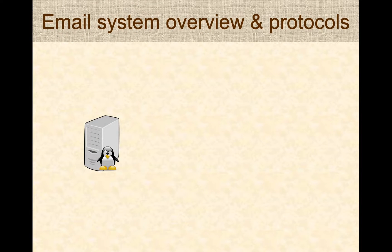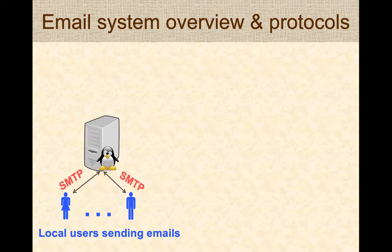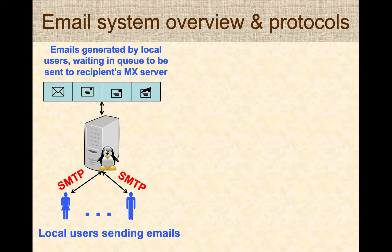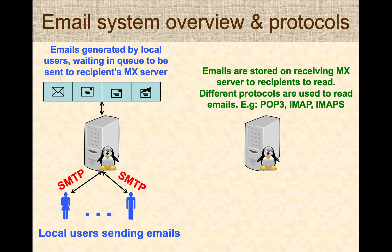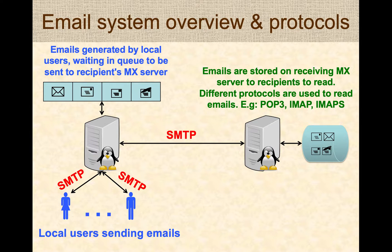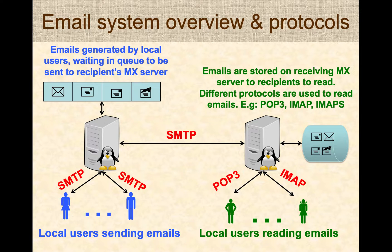As an overview, there is a server to which local users can send emails using SMTP. The local server manages a queue of emails waiting to be sent to different recipient servers. Each recipient has its own server, so the two servers interact via SMTP. The receiving server stores all emails in a database or local file system, and local users access their email using protocols like POP3 or IMAP. All sending of emails is done using SMTP, and we'll do a deeper dive into SMTP to see how it can be used to generate phishing emails.